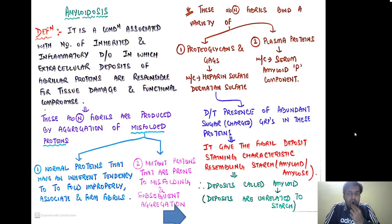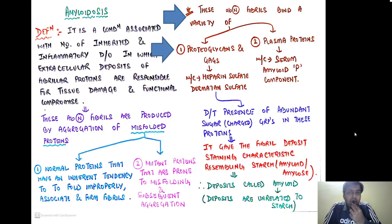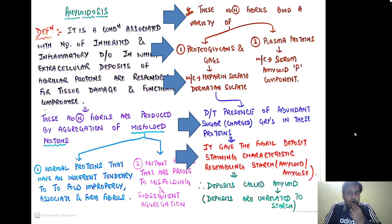These abnormal fibrils bind to a variety of proteoglycans and glycosaminoglycans — most commonly heparin sulfate and dermatan sulfate. Because of the abundant sugar content from these proteoglycans and glycosaminoglycans, the fibril deposits have a staining characteristic that resembles starch — hence the term amyloid. Remember, however, that the deposits are unrelated to starch.